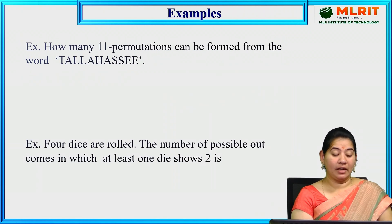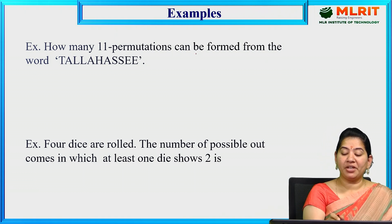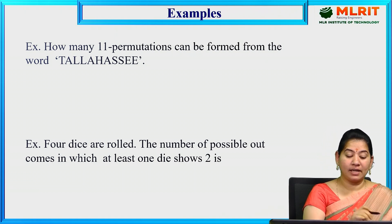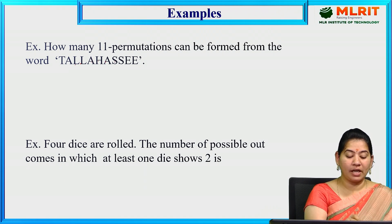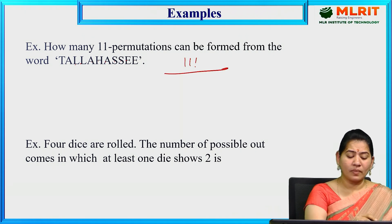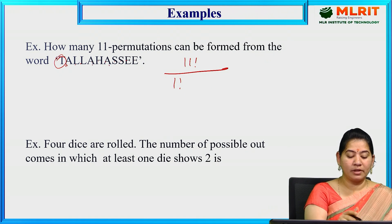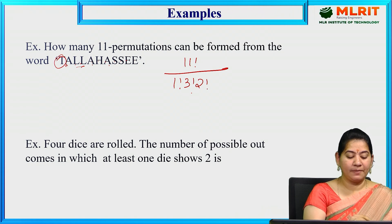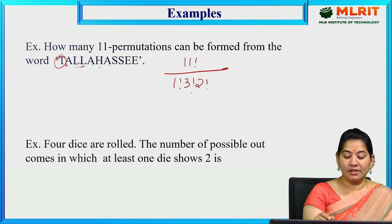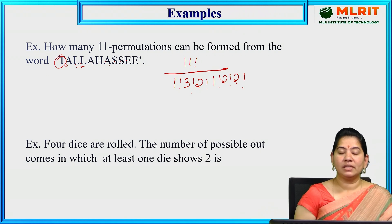How many 11-permutations can be formed from the letters of the word THALAZA? Total letters = 11, giving 11!. T is repeated 1 time, A is repeated 3 times, L is repeated 2 times, H is repeated 1 time, S is repeated 2 times, E is repeated 2 times. The formula gives 11! divided by the respective factorials.